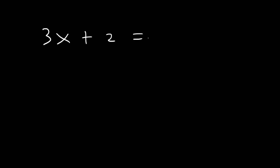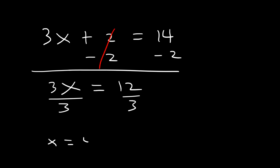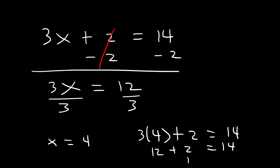Let's move on to our next example. Let's say that 3x plus 2 is equal to 14. Here we have a multi-step equation. The best way to solve it is to subtract 2 from both sides first — the 2s cancel, and on the right we have 14 minus 2, which is 12. Then divide by 3: 12 divided by 3 is 4. So x is 4. Checking our work: 3 times 4 is 12, plus 2 is 14. The equation is verified.